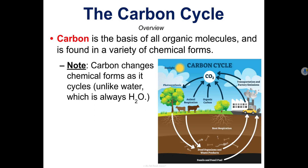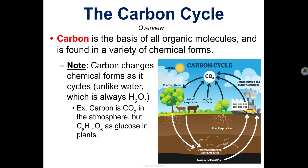This is unlike water. Water is always H2O, but carbon comes in different forms. It can be in the form of carbon dioxide, which is CO2 — that's what's in the atmosphere. It can also come in the form of glucose, which is a sugar. The formula for glucose is C6H12O6, and this sugar is what plants produce.